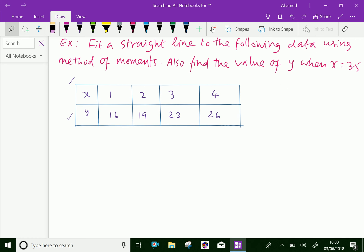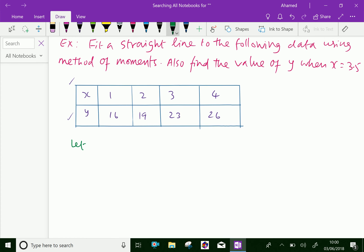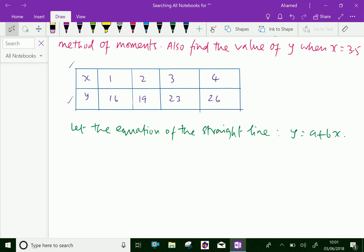Now let the equation of the straight line in the form of y equal a plus bx where a and b are constants. Now look at this x values which is 1, 2, 3, 4. So the difference of each value is 1. Therefore we have to keep h equal 1.